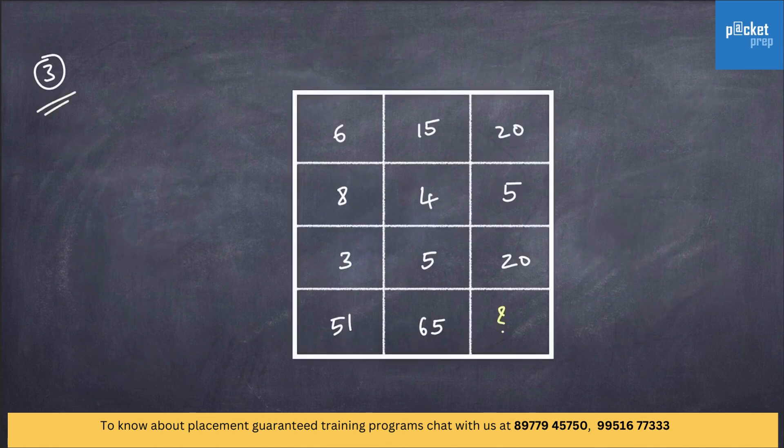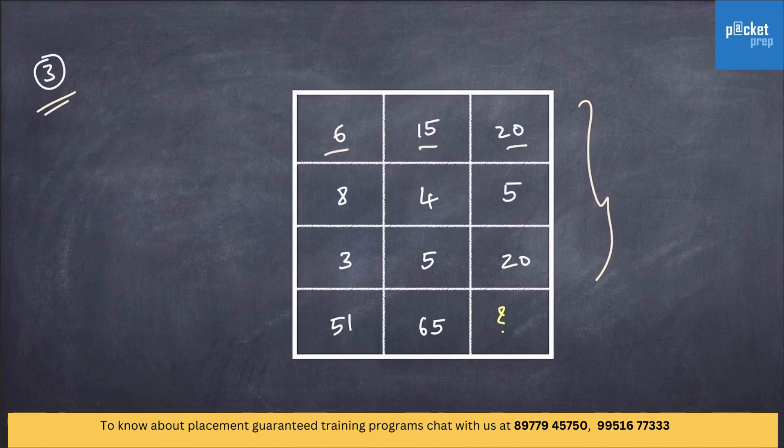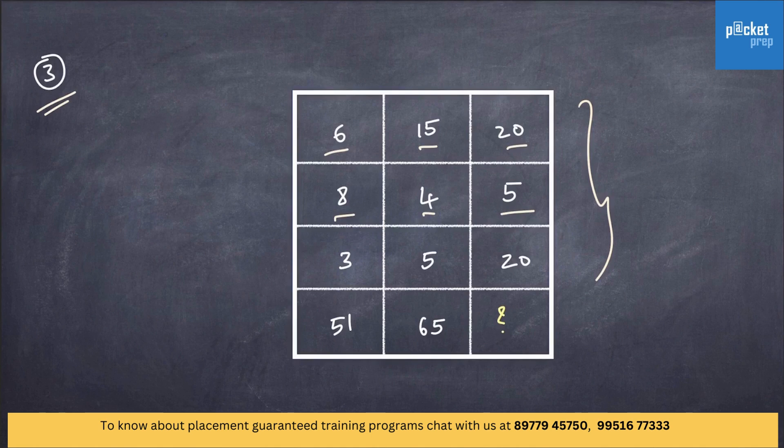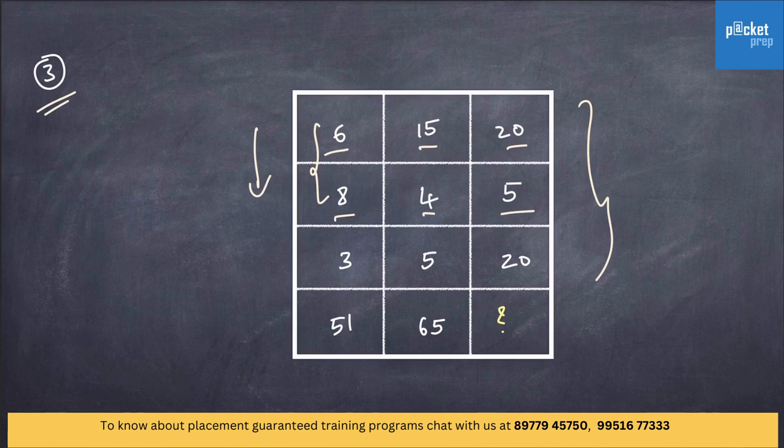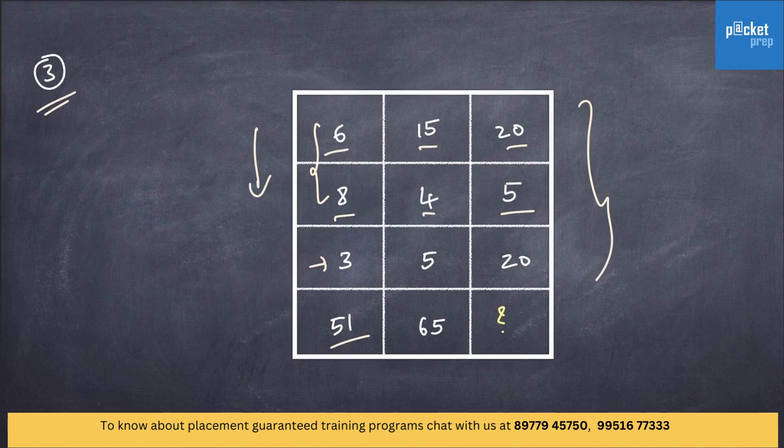Here is the third question. A set of numbers are given in a box. All these numbers may be confusing, but on keen observation, you will be able to draw out a solution. In this case, let's solve the problem in vertical direction. Product of first two numbers plus the third number gives this value.